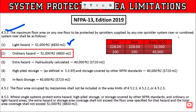For ordinary hazard and extra hazard area limitations, there are additional considerations. High pile storage as defined has its own area limits. The area occupied by mezzanines shall not be included in the floor area limits stated. Where a single system protects extra hazard, high pile storage, or areas covered by other NFPA standards, the combined ordinary and extra hazard areas shall not exceed the specified maximum square footage.